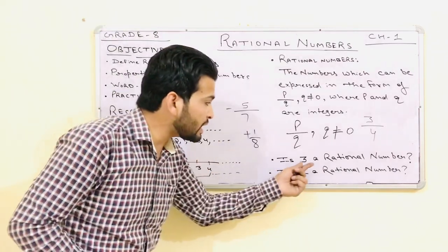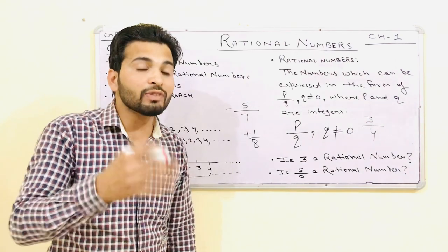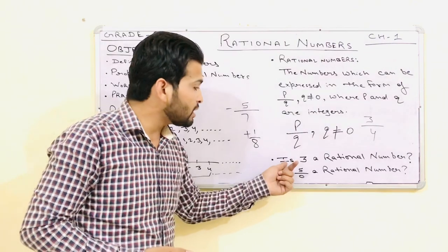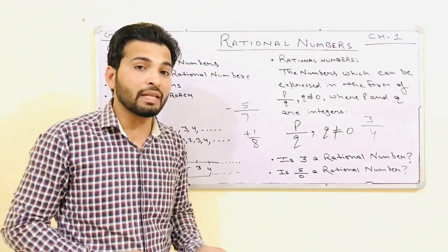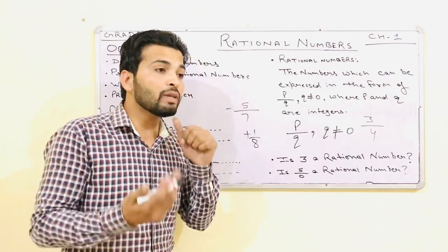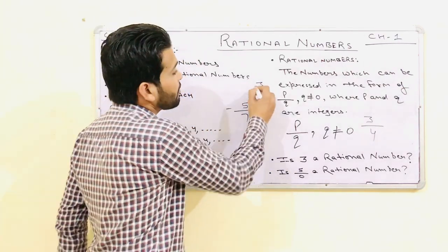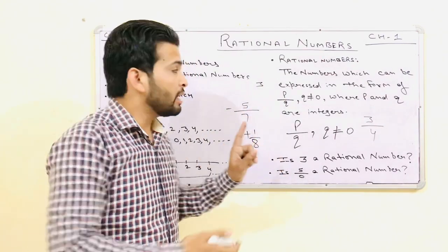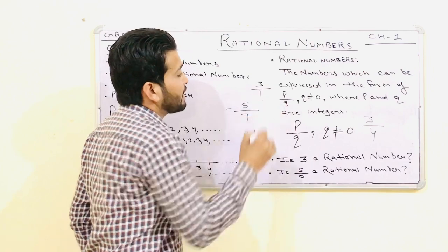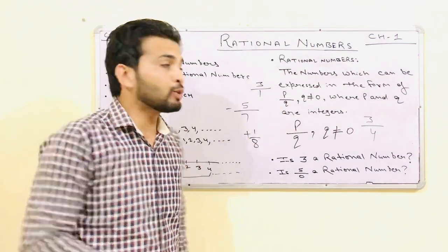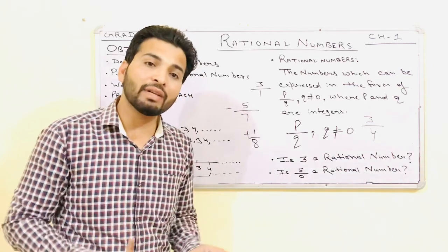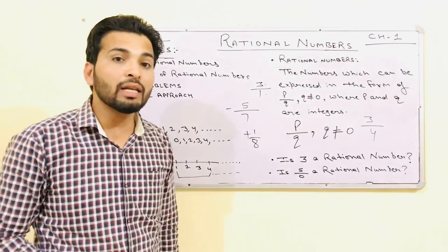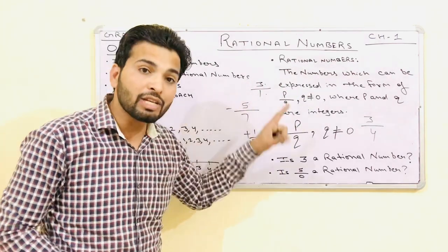One question: is 3 a rational number? Most students are confused by this kind of question. Think about it — you might say it is 3 only, so P equals 3, but what is Q? Q is not 0. We can take the denominator as 1, so 3 equals 3 upon 1. So 3 upon 1 is a rational number.